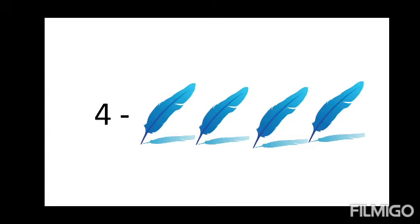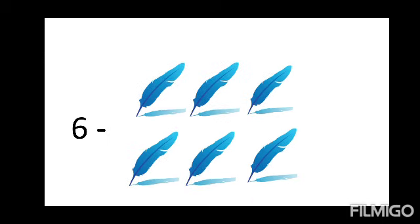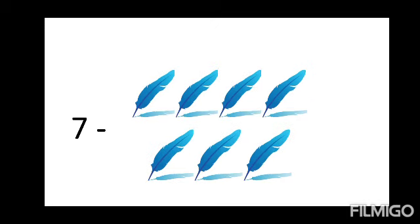Now in this picture there are four quills — count it: one, two, three, four. In this picture there are five quills — count it: one, two, three, four, five. Now in this picture there are six quills — count it: one, two, three, four, five, six. There are seven quills — one, two, three, four, five, six, seven. Count it!